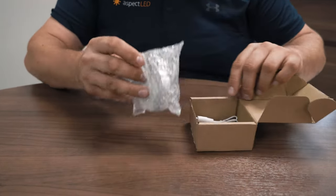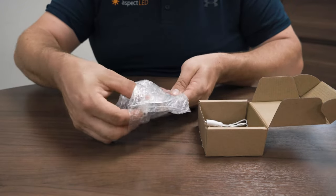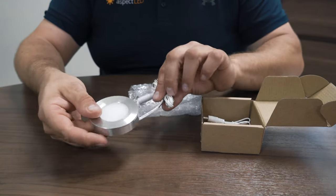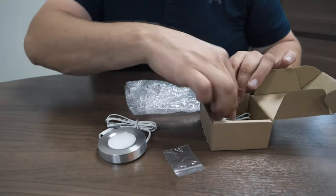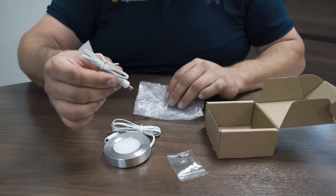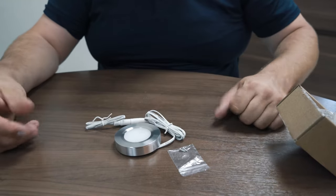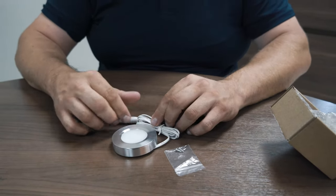The contents of the box are the light, which comes with a power cord attached, two little screws that we're going to use for mounting, and this additional cord. This could be plugged in here for additional length, or you can cut this end off.